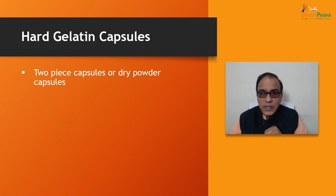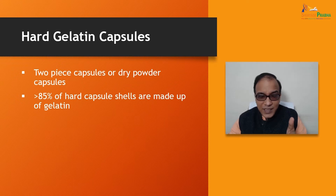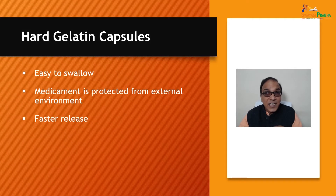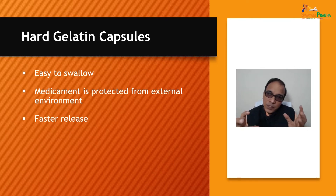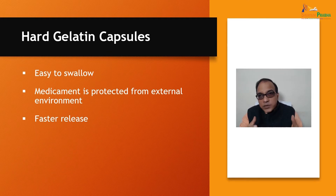Hard gelatin capsules are also known as two-piece capsules or dry powder capsules. More than 85% of hard capsule shells are made up of gelatin. They are elegant with good aesthetic value, easy to swallow, and the medicament is protected from the external environment. They provide faster release in comparison with tablets, because in tablets, disintegration is an additional step. Here, the rate-limiting step is only the capsule shell dissolution.